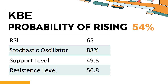Is KBE trading above or below its moving averages? Technical Signals and Analysis: KBE's 14-Day Relative Strength Index (RSI) value was 65. When the RSI is between 50 and 70, it generally indicates that the stock is moderately bullish. This means that the security's price has been rising but has not yet reached overbought levels, which are usually considered an RSI reading of 75 or higher.